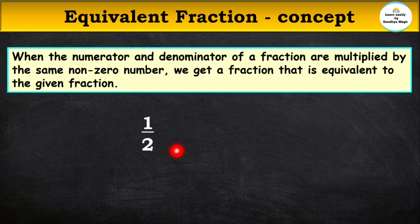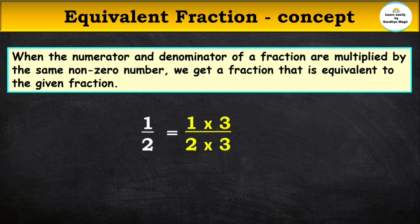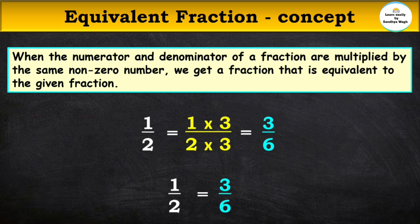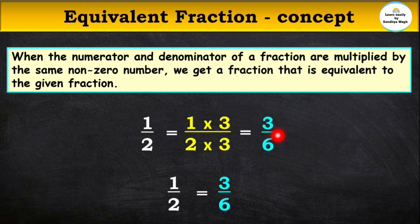For example, the fraction is 1 upon 2. Numerator is 1 and denominator is 2. We multiply both the numerator and denominator by 3: 1 times 3 is 3 and 2 times 3 is 6. So here, 3 upon 6 is the equivalent fraction of 1 upon 2, found using multiplication.